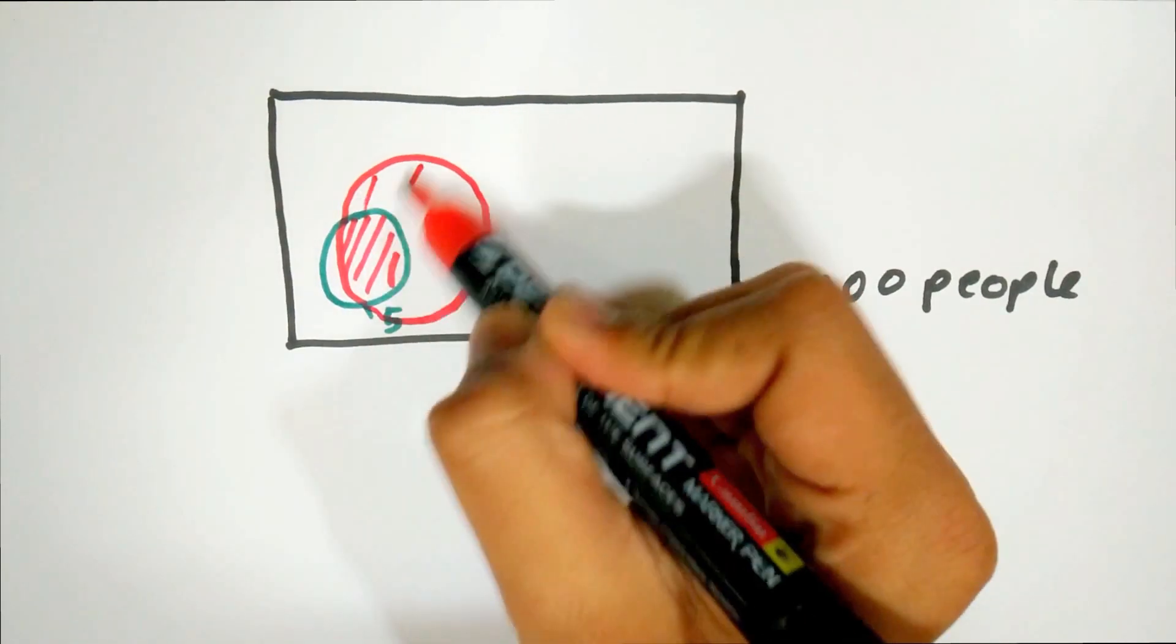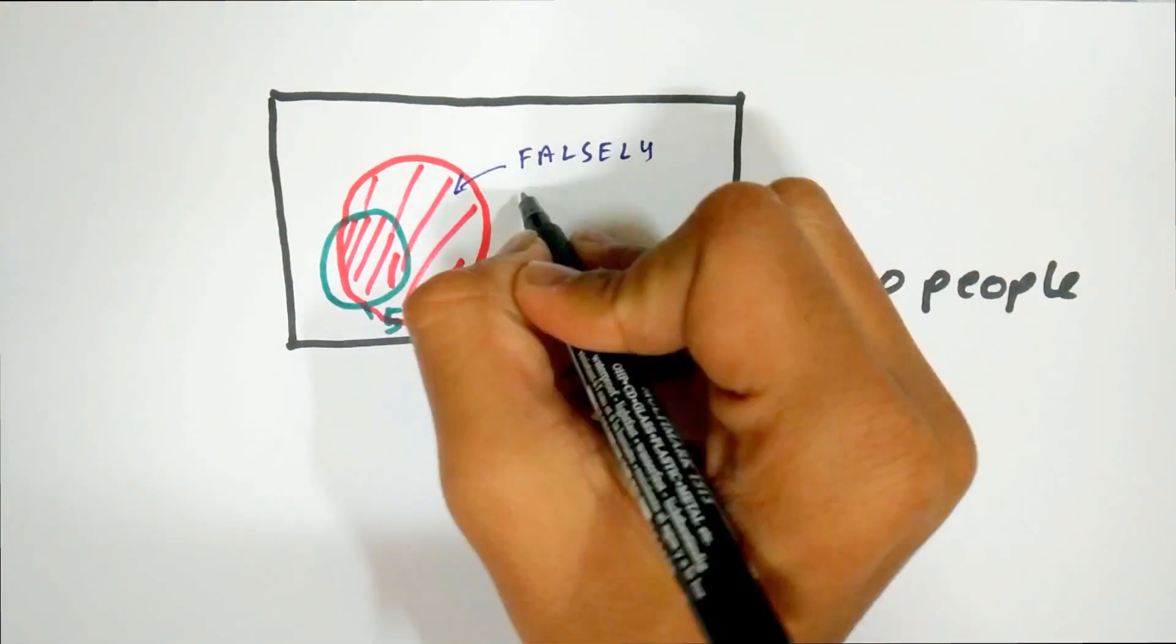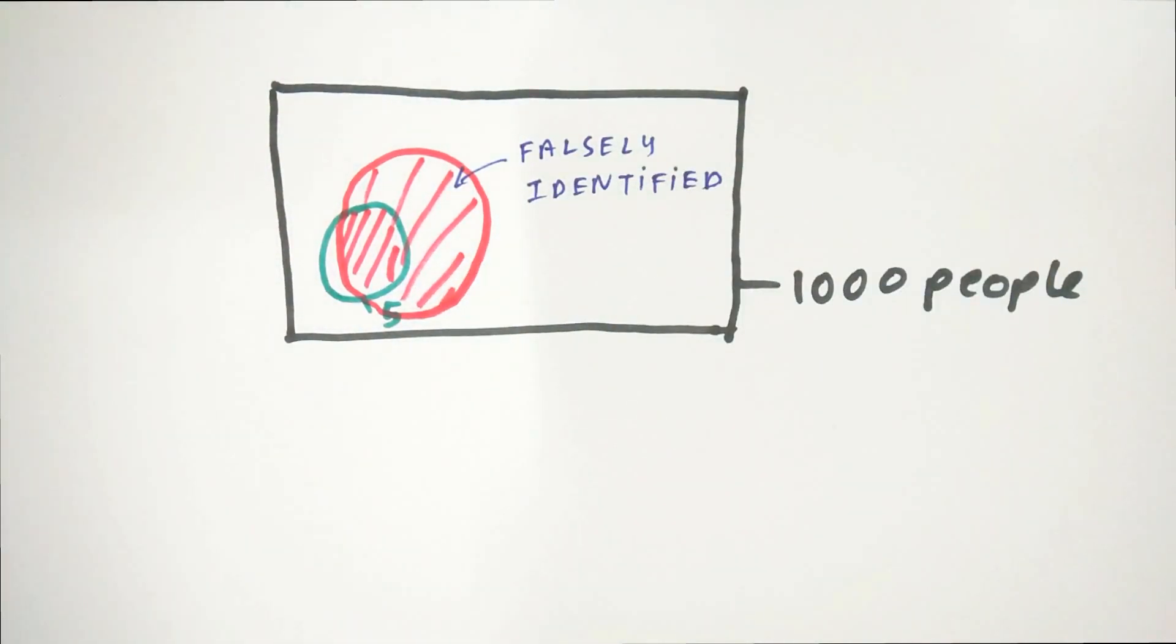But the test is also 10% inaccurate. Hence, 10% of the remaining people without the disease will also be falsely tested positive. As you can clearly see, the set of people falsely being identified to have the disease is much larger than the people who actually have the disease.